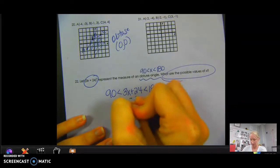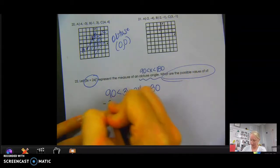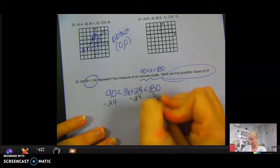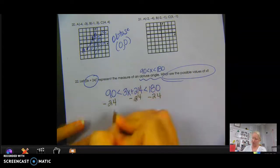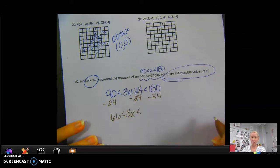So first thing I'm going to do is I'm going to subtract 24. But instead of just doing it to the one side, I have to do it to both sides. So 90 minus 24. 90 minus 20 is 70. 70 minus 4 would be 66.